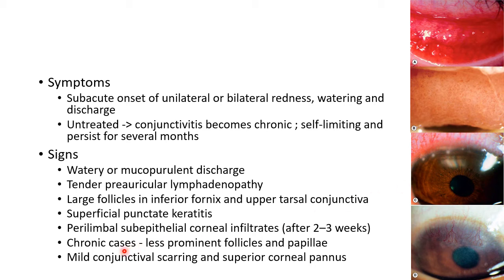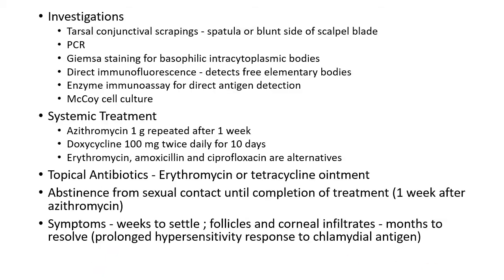In chronic cases, the follicles become less prominent and papillae may appear. There will be mild conjunctival scarring and superior corneal pannus in case of chlamydial conjunctivitis, as seen in this picture.